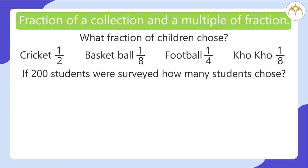If 200 students were surveyed, how many students chose Cricket? We find 1 by 2 of 200 means 1 by 2 multiplied by 200 which gives us 100. So, the answer is 100.